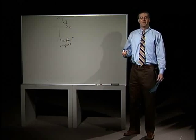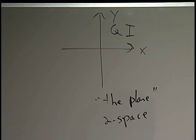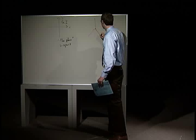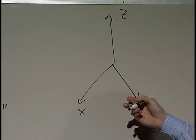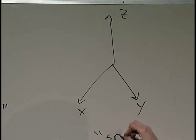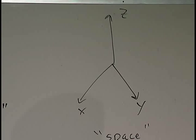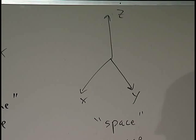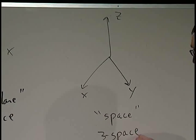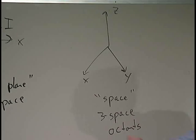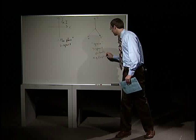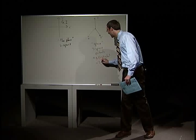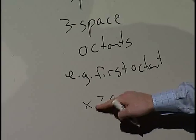So what, then, is 3-space? Well, it has an x, a y, and a z-axis. Space is what we call it from now on — so when I refer to space, I'm talking about 3-space. And it's divided into not quadrants, but octants. The first octant is where all the signs of x, y, and z are greater than 0.